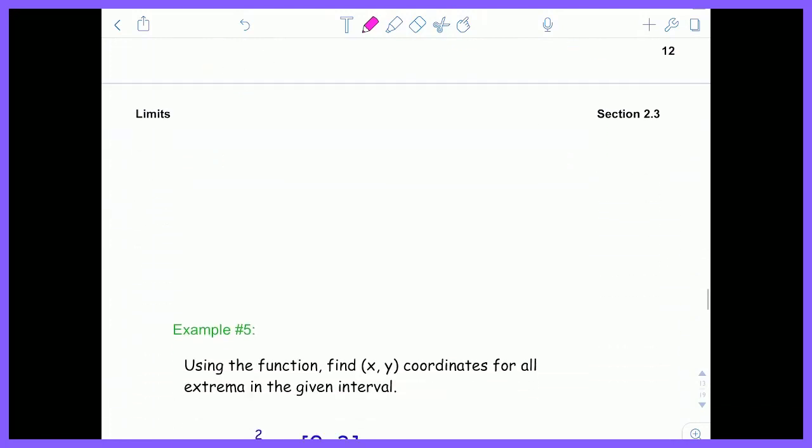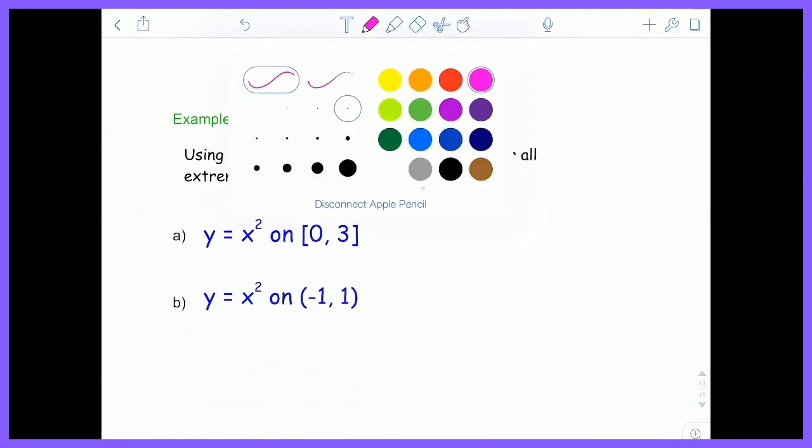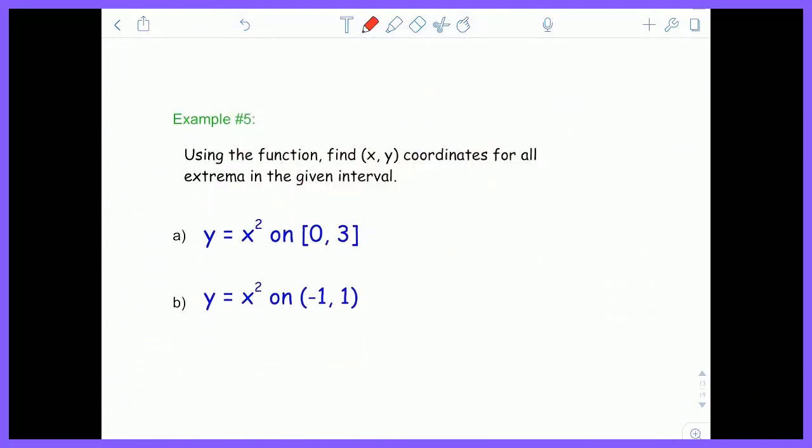So let's try some examples. Example number 1, using the function, find the coordinates for all extrema. So let's take a look at x squared on the closed interval 0 to 3. A brief picture. So if you plug in 0, you get 0. So it's right here.